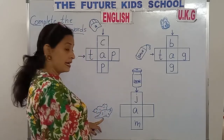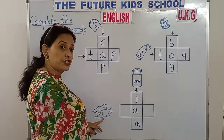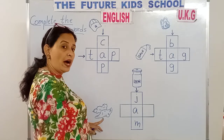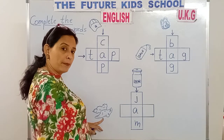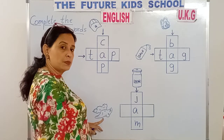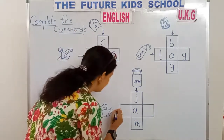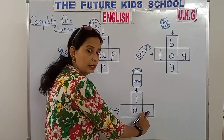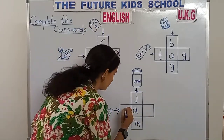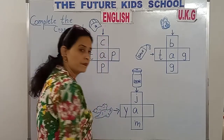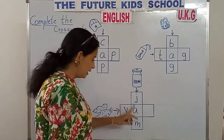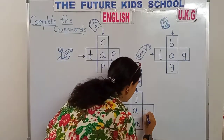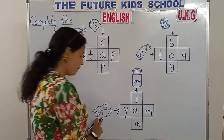This is yam, children — a vegetable. Yam. Y-A-M spells yam. And the arrow is pointing this side. Let's write the word. Y-A-M. Yam.